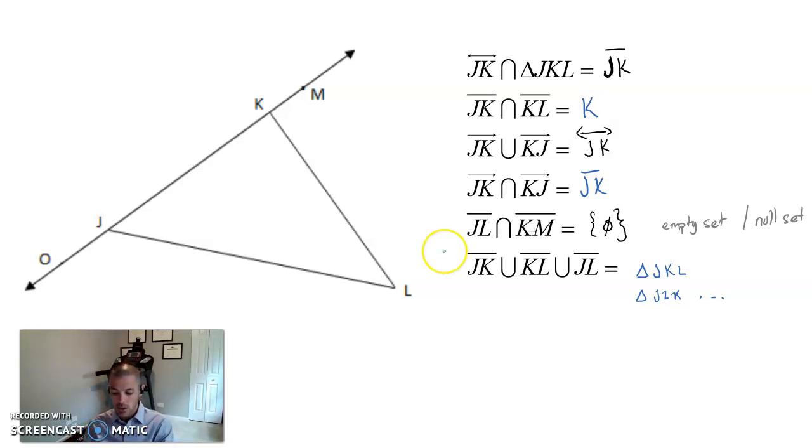And then, segment JL is this segment here with segment KM. That's this segment here. What does their intersection, not the union, there isn't one. They never share anything. They don't touch. So, that's called the empty set or the null set, and it's illustrated this way.